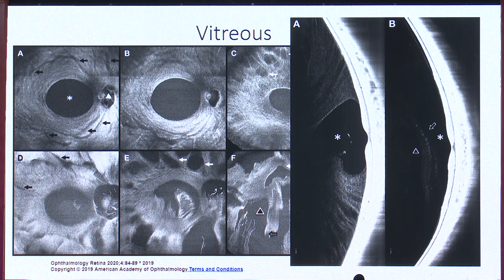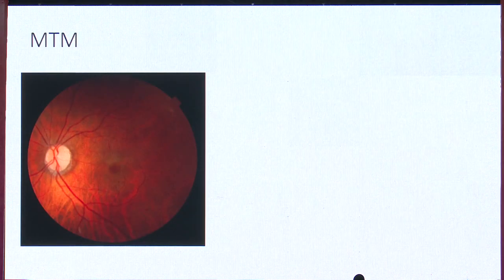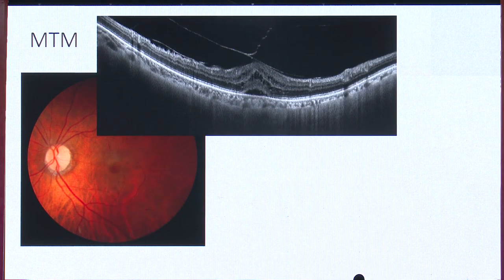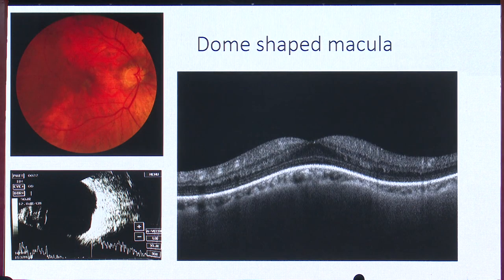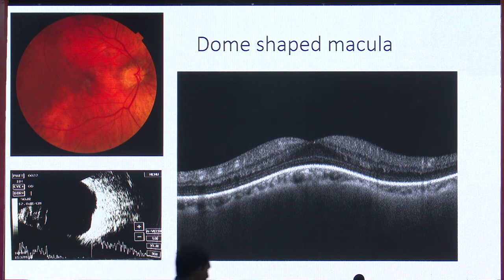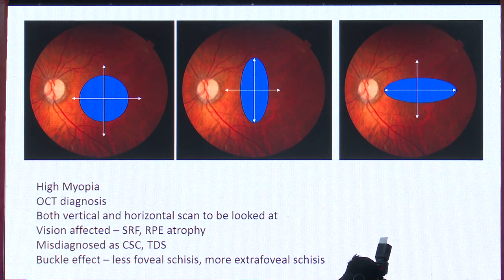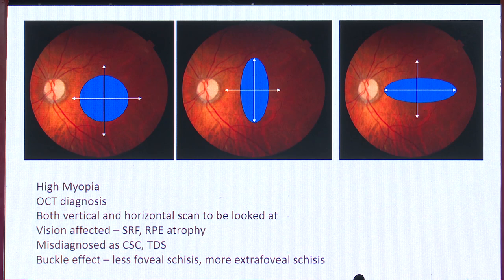In myopic cases the retina might appear completely normal on fundus, but OCT reveals vitreo-macular traction, a table-top configuration, macular holes, or myopic traction maculopathy. One newer terminology specifically described on OCT in myopia is dome-shaped maculopathy, where the fundus may be completely normal or the patient may be referred as a mass lesion, but OCT shows a convexity in the area of the staphyloma. This can be symmetrical, a vertical dome-shape, or a horizontal dome-shape maculopathy. If only a horizontal scan is performed, it may be missed — both horizontal and vertical scans are important.